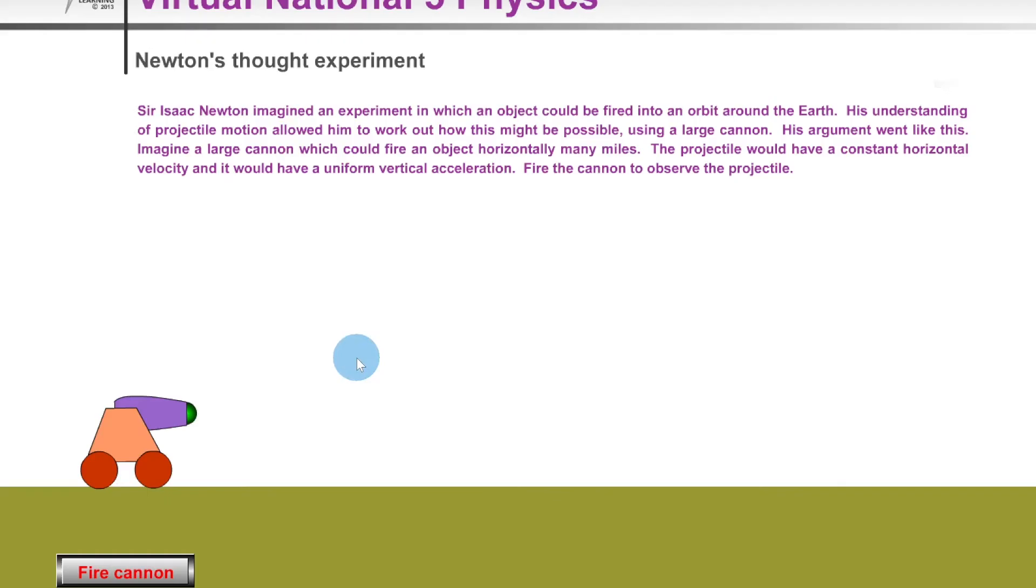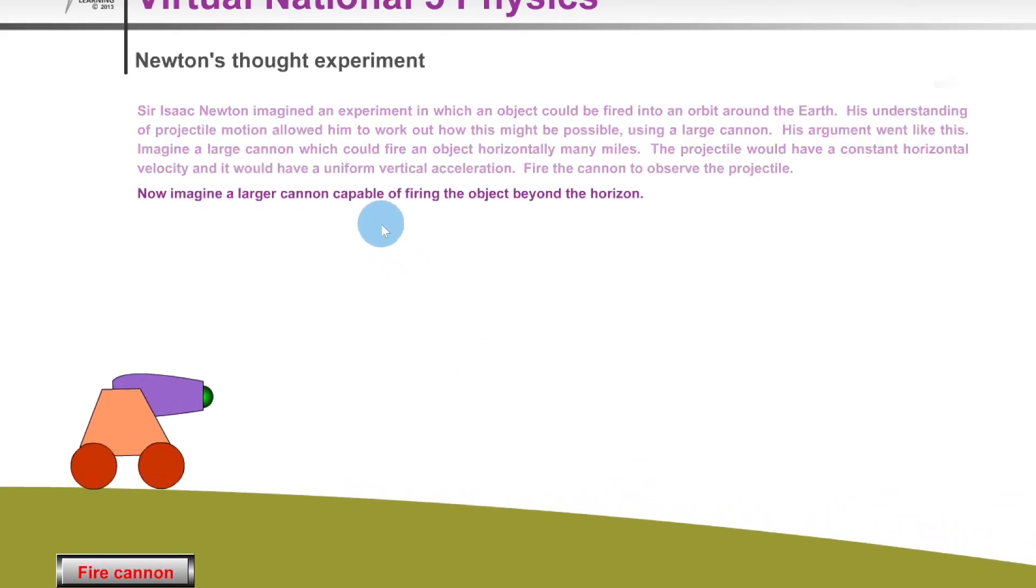We're going to recap Newton's thought experiment using the simulation. Imagine a large cannon which could fire an object horizontally many miles. The projectile would have constant horizontal velocity and uniform vertical acceleration. If I fire the cannon, you'll see the cannonball move some short distance over here on the surface of the Earth.